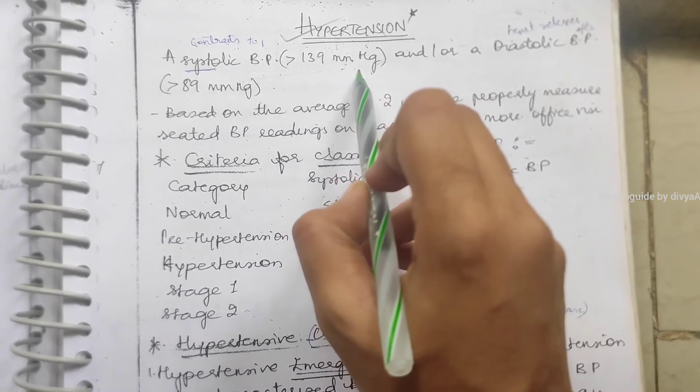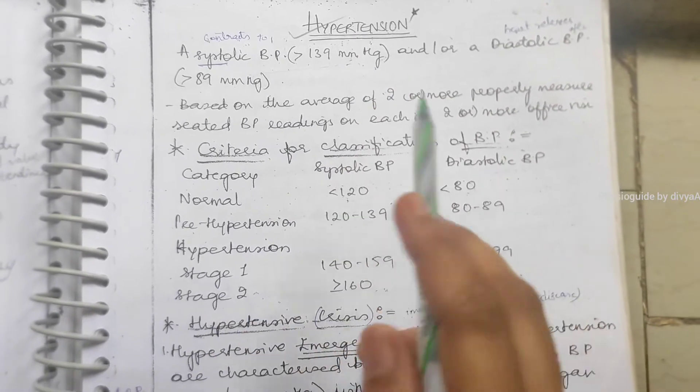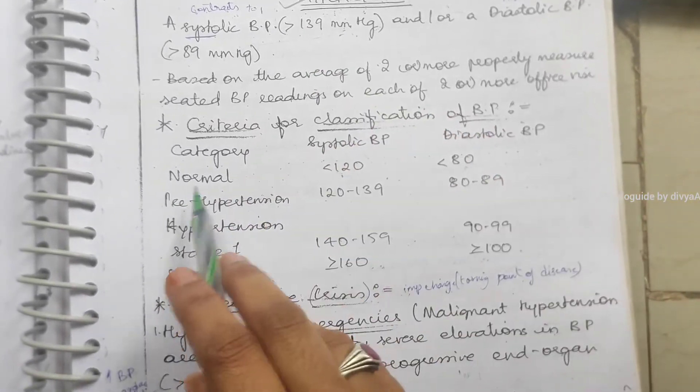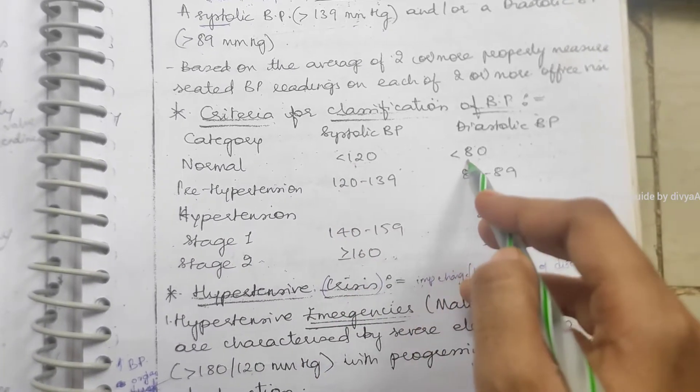Now criteria for classification: what are the normal, pre-hypertension, and what are the severe forms of BP? Normal BP means if it is less than 120 systolic and diastolic is less than 80. Pre-hypertension means starting of BP, it will be in the range of 120 to 139 systolic and diastolic 80 to 89.